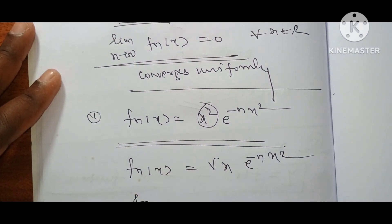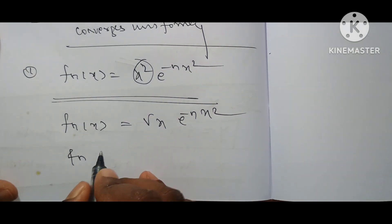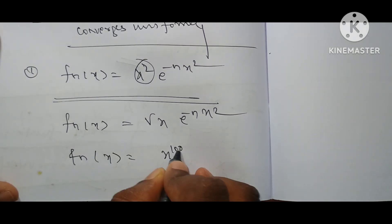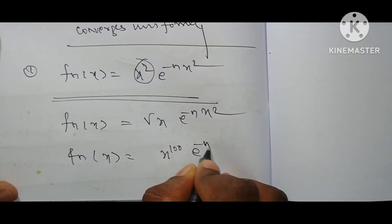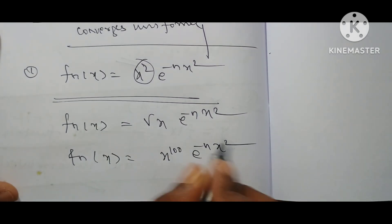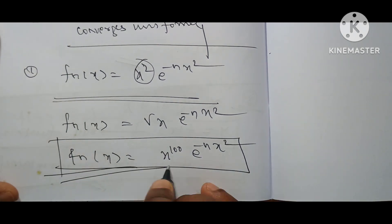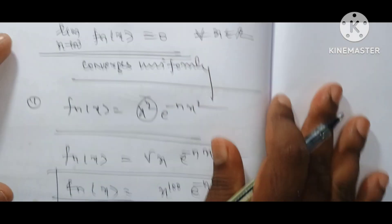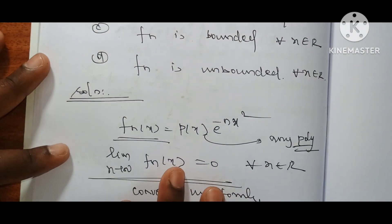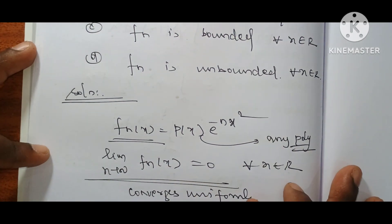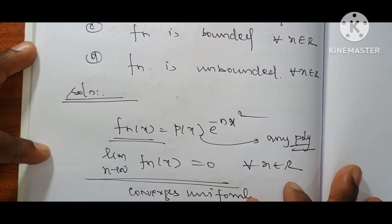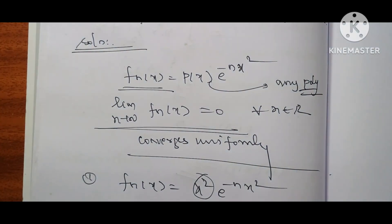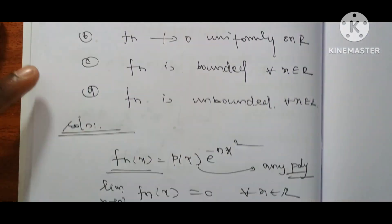So f_n(x) = x^100 · e^(-n·x²). If you consider the uniform convergence where f_n(x) = x, this is the trick we use. For any polynomial p(x), e^(-n·x²) · p(x) converges to 0 uniformly for every x belonging to R.